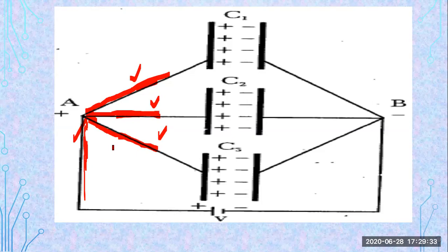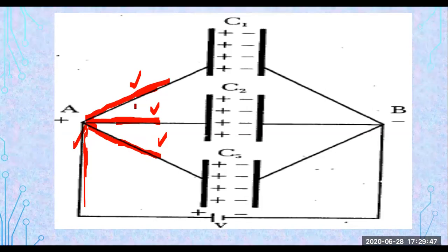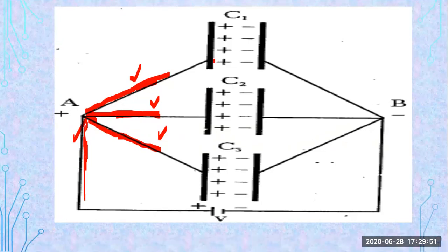Applying the same concept to charges: the charges going through the main line move into three branches. It is clear that the charges are divided into three branches, and different amounts of charges will reach each capacitor C1, C2, and C3. That is why we have different charges on each capacitor.